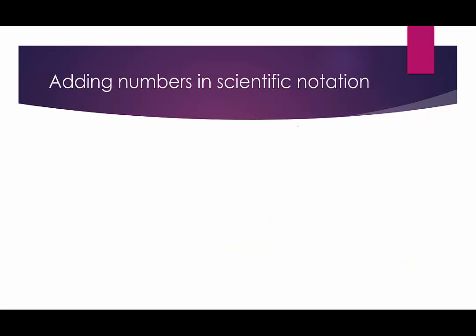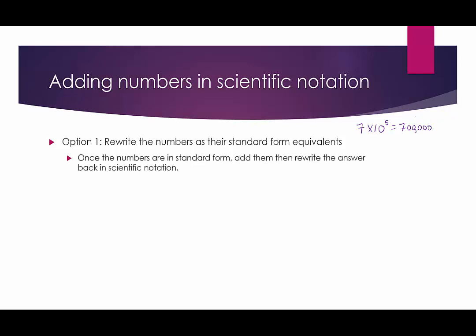When adding or subtracting numbers in scientific notation, there are two options. Option one is to rewrite the numbers as their standard form equivalents. For example, 7 times 10 to the fifth means moving the decimal point of 7 five places to the right, which is equivalent to adding five zeros — giving 700,000. Then we add the standard form numbers and put the answer back into scientific notation.